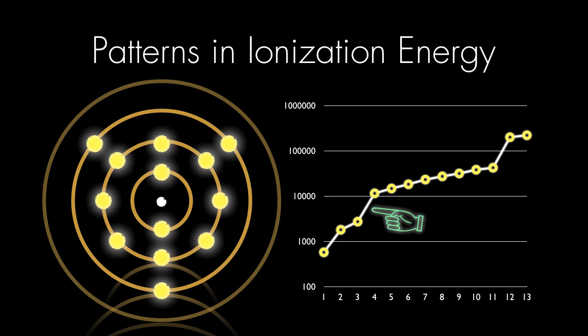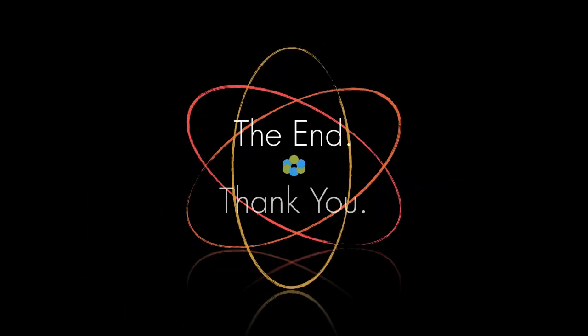There's a big gap between the third and fourth ionizations of aluminum. That's when we ran out of electrons in the third shell and started pulling electrons from the second shell. There's another big gap right before the last two electrons. That's when we finished pulling electrons from the second shell and started to pull them from the first shell. That's it. Thank you for watching.